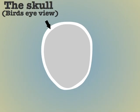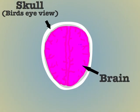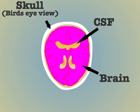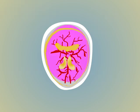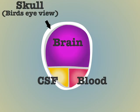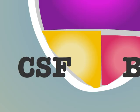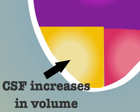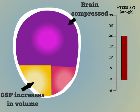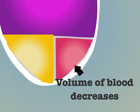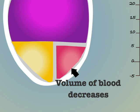There are three main components inside the skull: the brain, the CSF, and the blood. If any one of these components increases in volume then intracranial pressure will increase. If any one of these three components decreases in volume then ICP will be reduced.